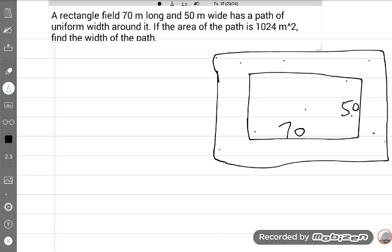The rectangular field, the area is 1024 meters square. Find the width. Now let's start. Path area is equal to 1024 meters square. The path area is this part and this part, this part, this part, this length - this is the extra.